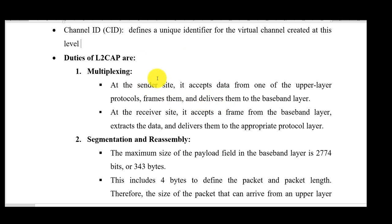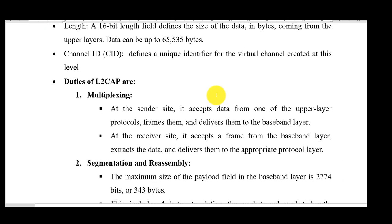L2CAP supports multiplexing — data coming from different higher-layer applications, such as audio playing on a speaker, mouse control, and file transmission, are all multiplexed together and delivered to the baseband layer. On the sender side it performs multiplexing; on the receiver side it performs the reverse — demultiplexing — and delivers data back to each respective application, similar to the transport layer in the OSI model.